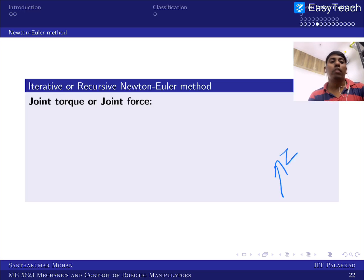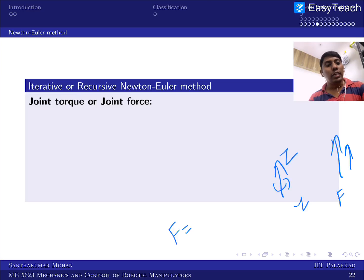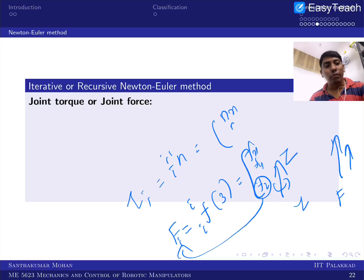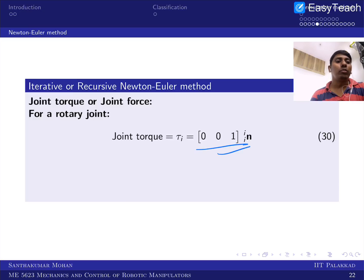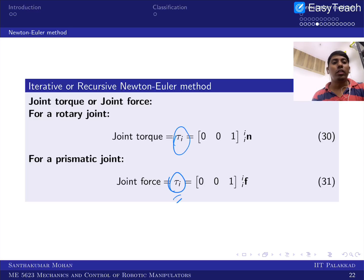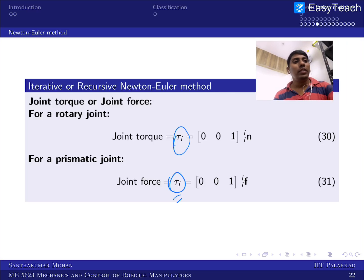Finally, each joint axis is associated with either a torque (for a rotary joint) or a force (for a prismatic joint). The relevant quantity is the last component of the force or moment vector — for example, fz from [fx, fy, fz] corresponds to the joint force, and nz from [nx, ny, nz] corresponds to the joint torque. A single variable τ_i represents either joint force or joint torque depending on the joint type.